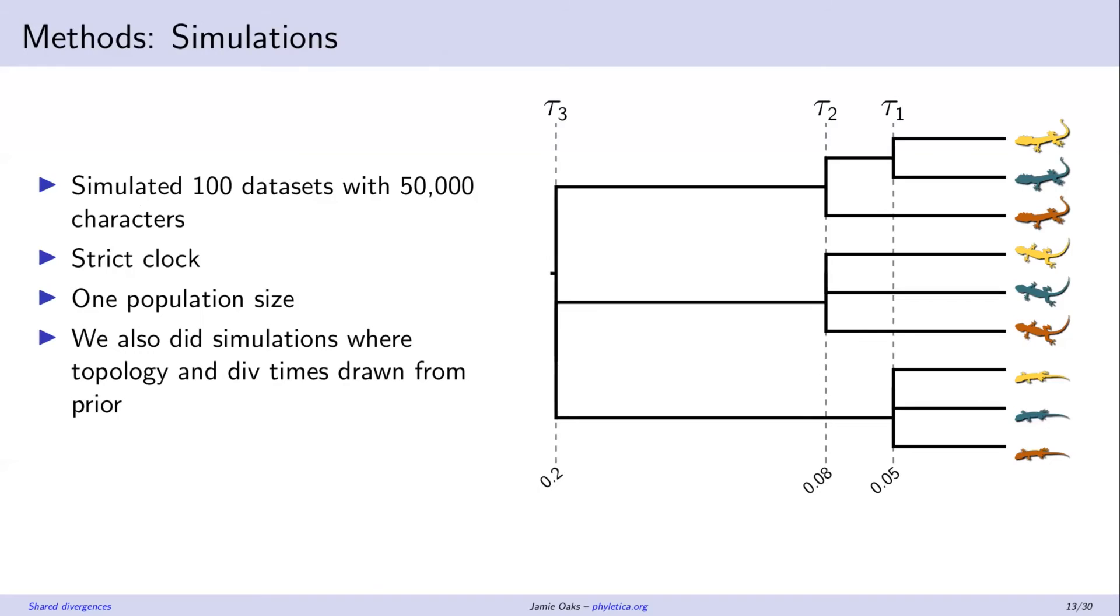Okay, so first thing to do is simulate some data and see if the method is working. So we simulated 100 data sets on this tree here with each data set having 50,000 characters. Keeping it simple. We're assuming a strict clock and we're assuming one shared effective population size applied to every branch on the tree. So there's just one population size. We simulated 100 data sets on this tree.